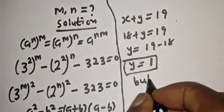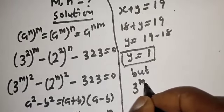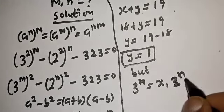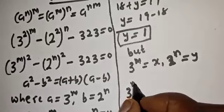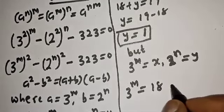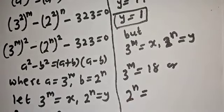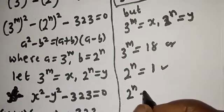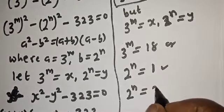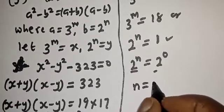But 3 raised to power m equals s, and 2 raised to power n equals y. So 2 raised to power n equals y, which is 1. Now, 1 equals 2 raised to power 0. Since we have the same base 2, therefore n is equal to 0.